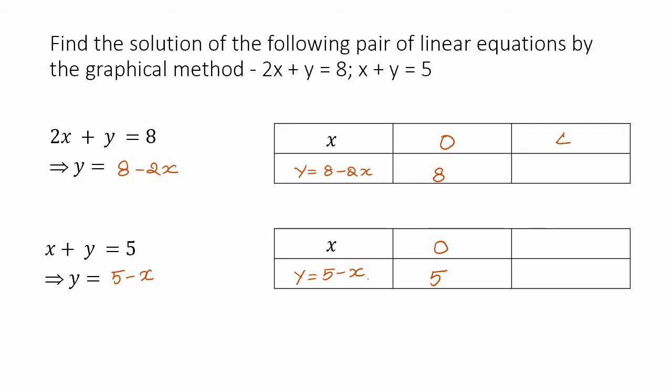When x equals 4, y becomes 0. When x is 4, y equals 8 minus 2 times 4 which becomes 0.